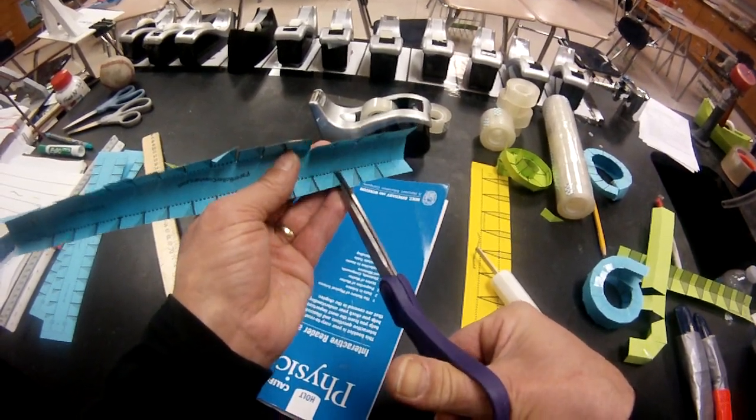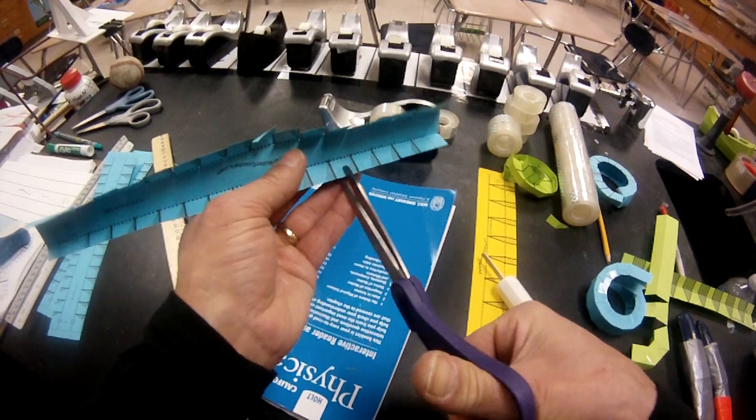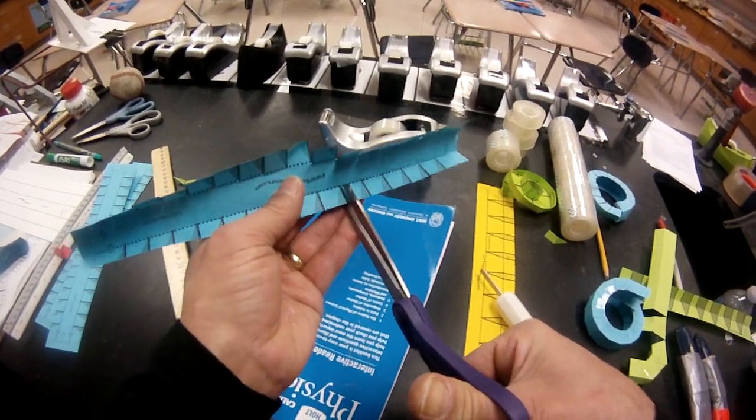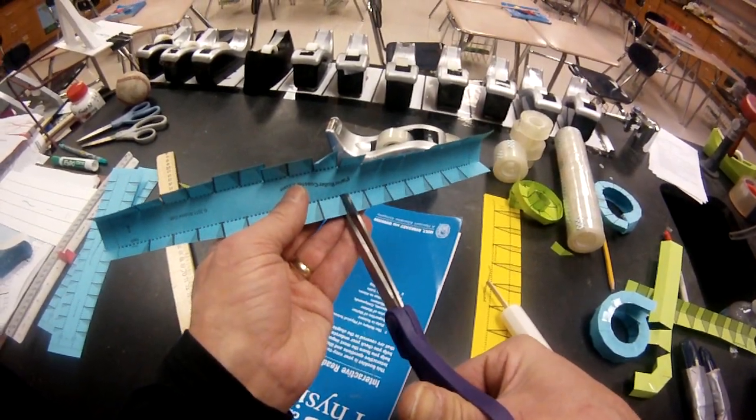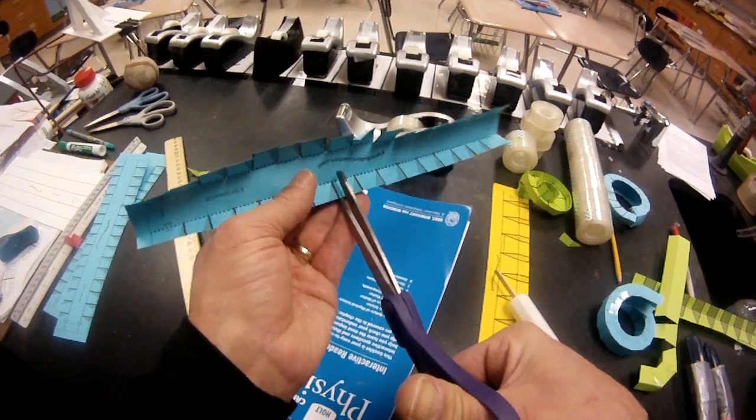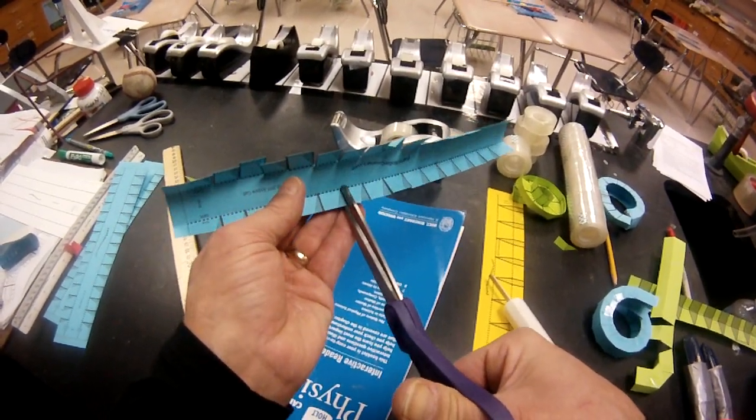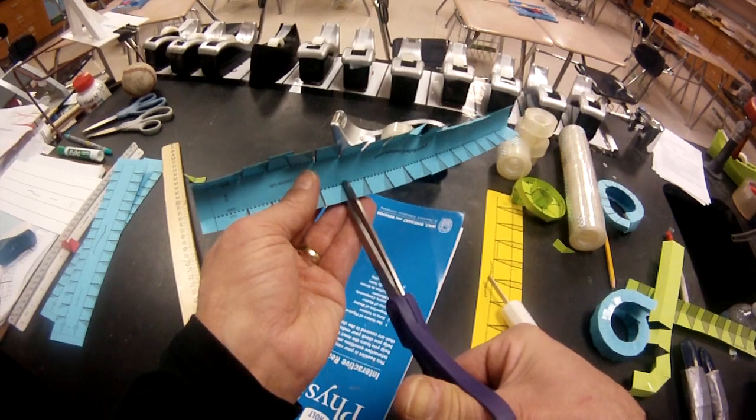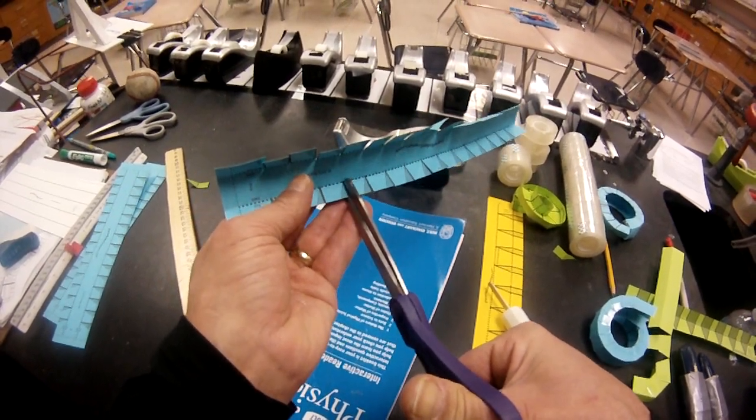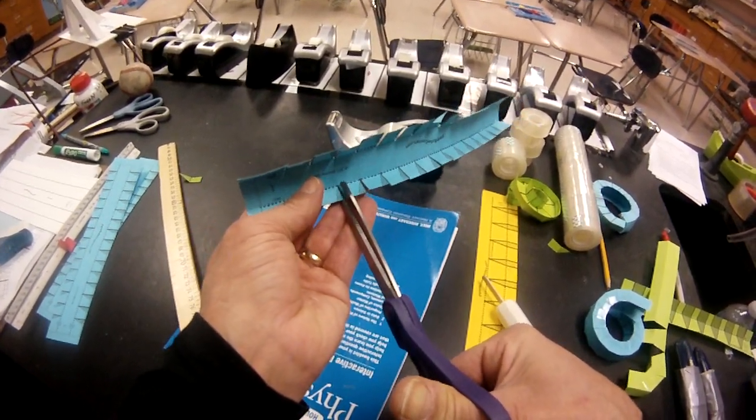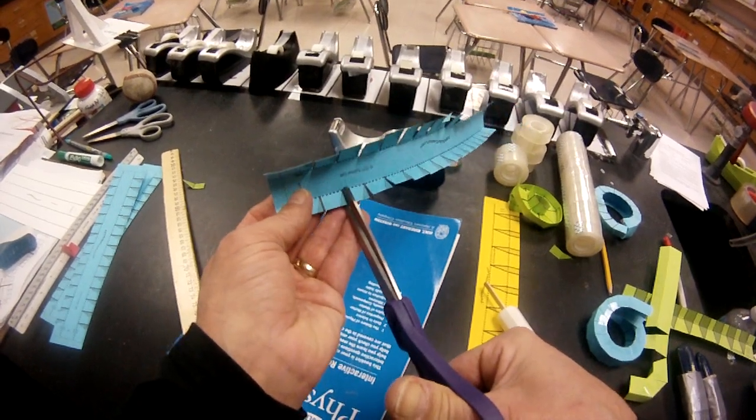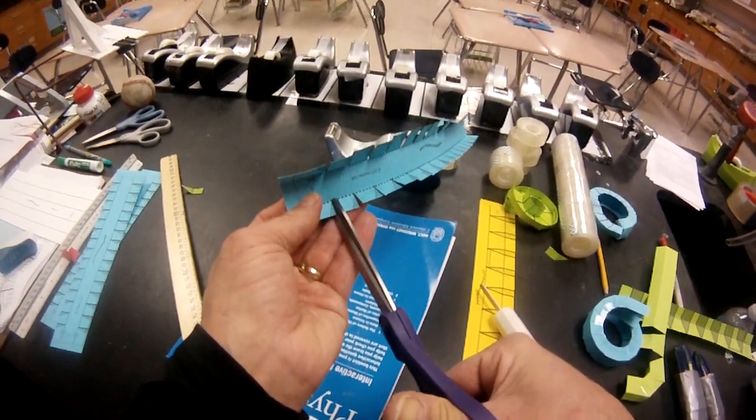That means you're gonna need 30 little pieces of tape, because there's 15 cuts on this side, so you're gonna use 30 little pieces of tape no more than a centimeter wide. I cannot emphasize that enough. Too much tape is not good. Not only does it look gross, but it will slow the ball down.